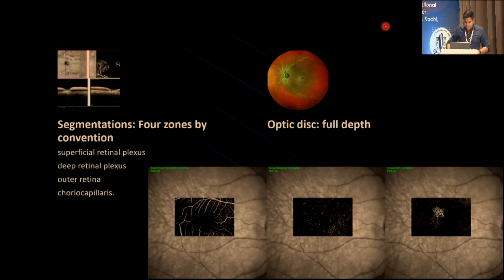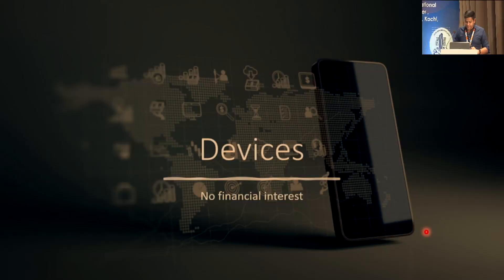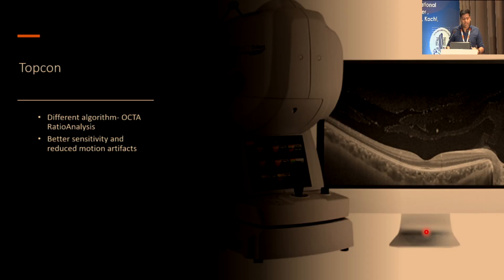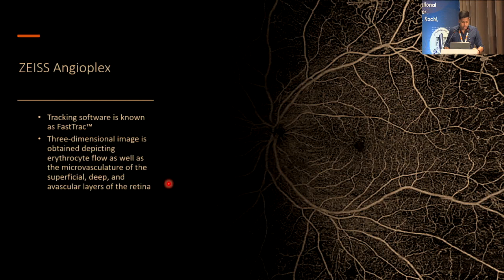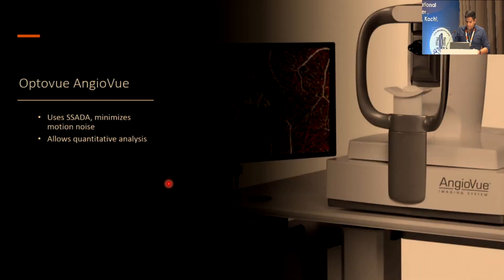OCTA algorithm overview: available image sizes include 12x12, 9x9, 6x6, and 3x3. Segmentation is classically by four zones: superficial retinal plexus, deep retinal plexus, outer retina, and choriocapillaris. Various devices include Topcon — with OCTA ratio analysis, better sensitivity and reduced motion artifact; Heidelberg Engineering — with spectrally true track beam using a single beam and true-track dual beam system; Zeiss Angio Plex — with FAST track tracking software obtaining 3D images depicting erythrocyte flow; and Optovue Angio Vue — using SSADA, minimizing motion noise and allowing quantitative analysis.